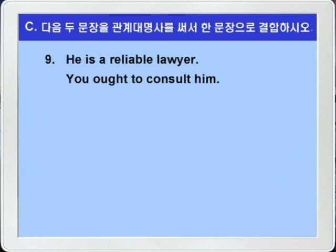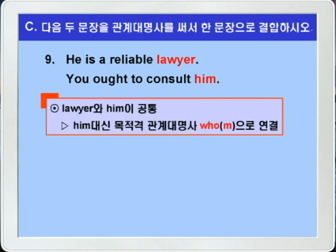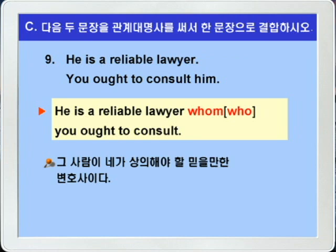9번입니다. He is a reliable lawyer. You ought to consult him. 그는 믿을만한 변호사이다. 너는 그와 상의해야 한다. 참고로 consult는 의사나 변호사 같이 전문 지식이 많은 사람하고 상의할 때는 타동사로 사용하고, 친구같이 허물없는 사람하고 상의할 때는 consult with 형태로 전치사와 함께 사용됩니다. 두 문장에서 공통되는 것이 lawyer와 him이 서로 공통이죠. 따라서 a reliable lawyer를 선행사로 삼고 him을 목적격 관계대명사 whom으로 바꿔서 He is a reliable lawyer whom you ought to consult.